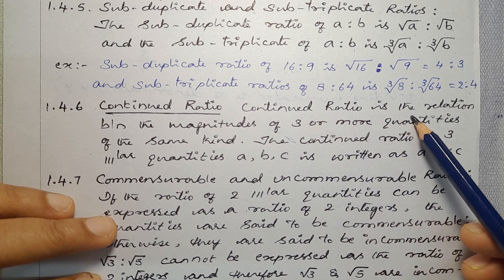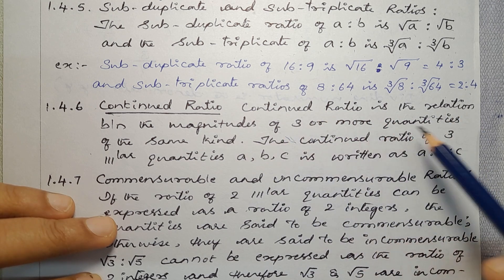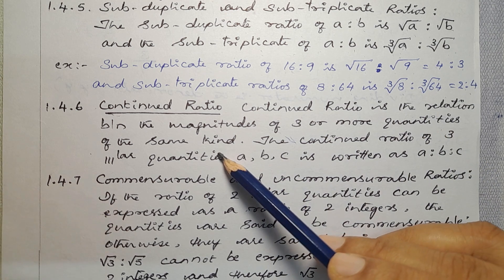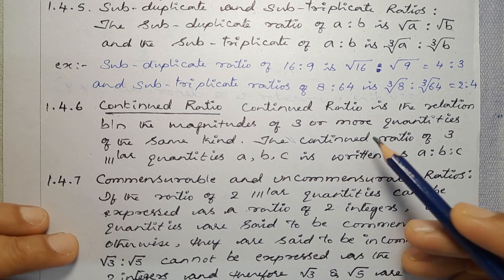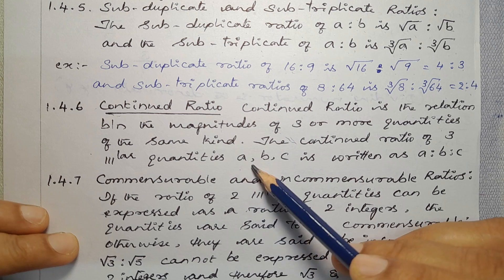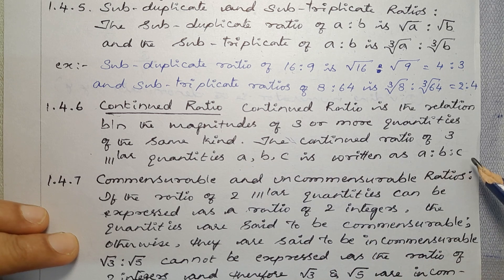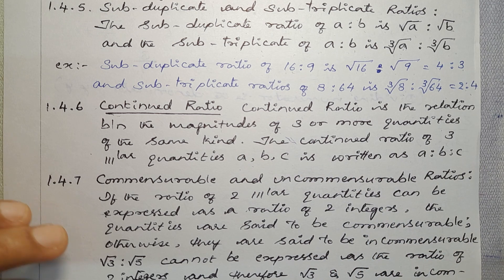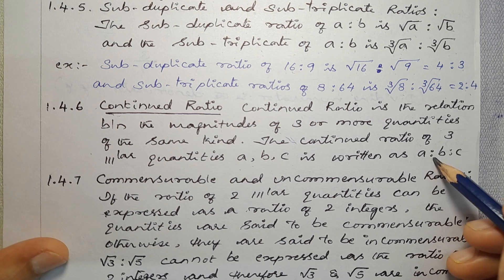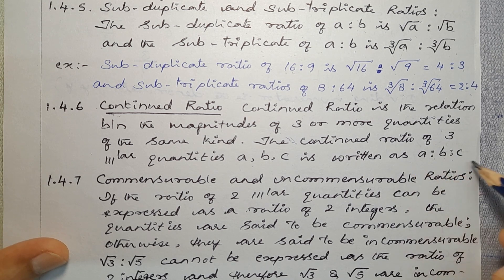Next, Sub-Article No. 1.4.6 — Continued Ratio. A continued ratio is the relation between the magnitudes of three or more quantities of the same kind. The continued ratio of three similar quantities A, B, C is written as A is to B is to C.